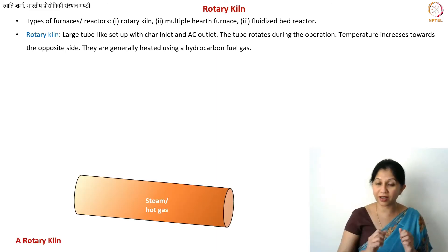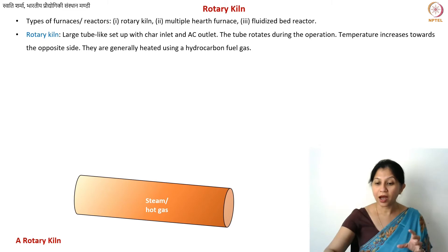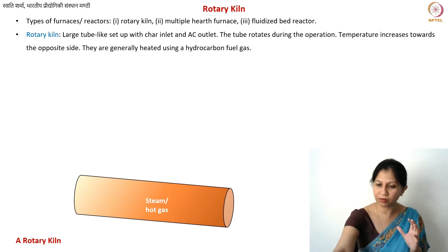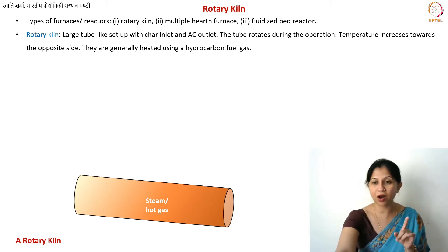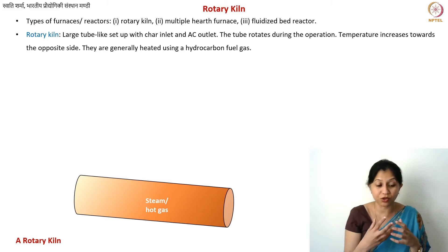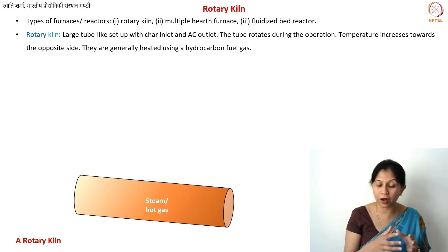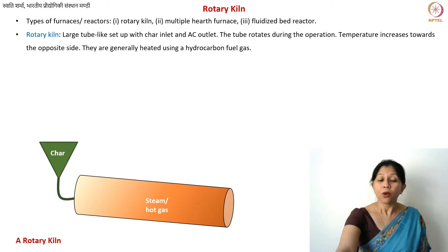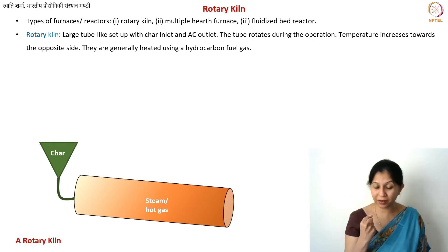The rotary kiln is a very large tube-like structure, several meters long — typically a metallic, cast iron tube, which you may make in separate parts and join together. This is a very large metallic tube where you have steam and hot gas flowing; the hot gas is produced by your fuel. You can also have carbon dioxide or other gases, whatever you require for your type of activation.